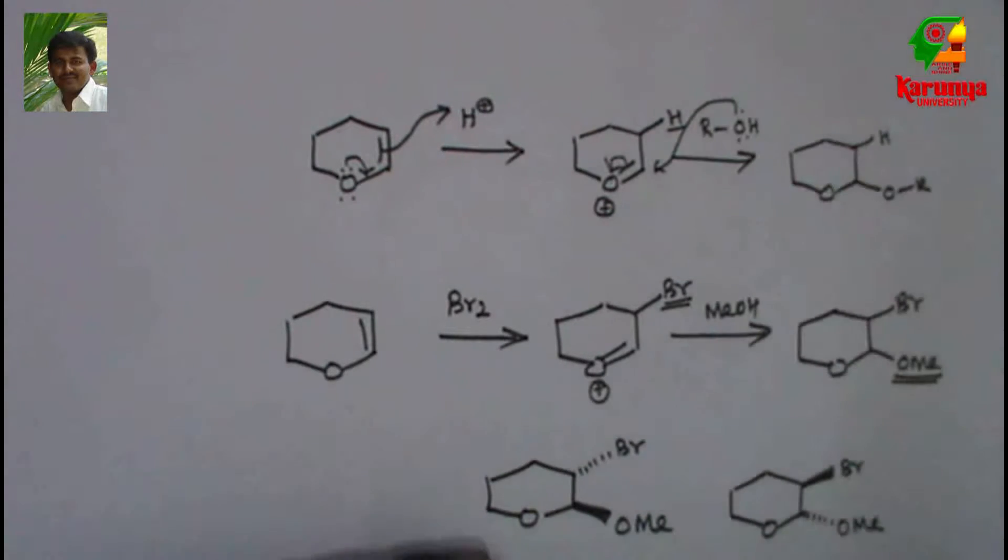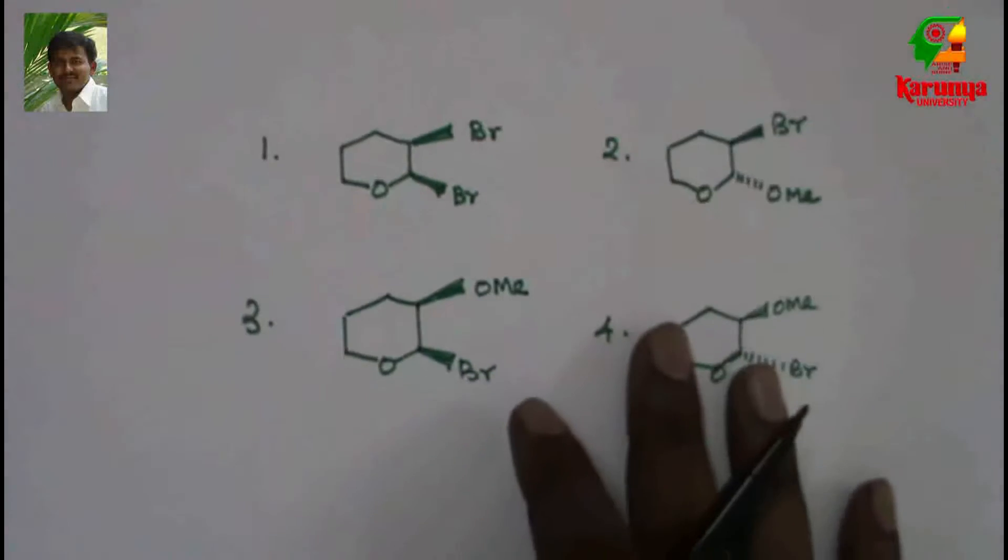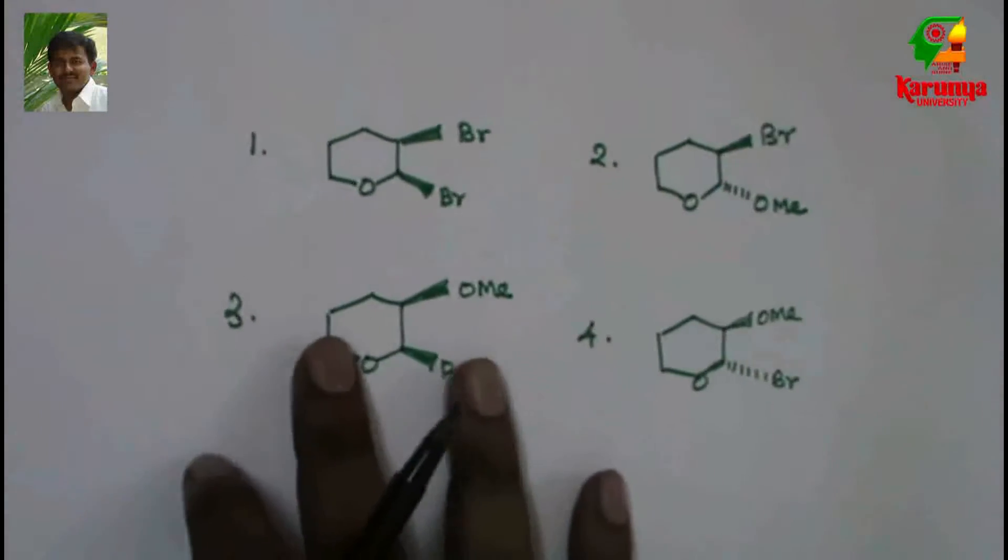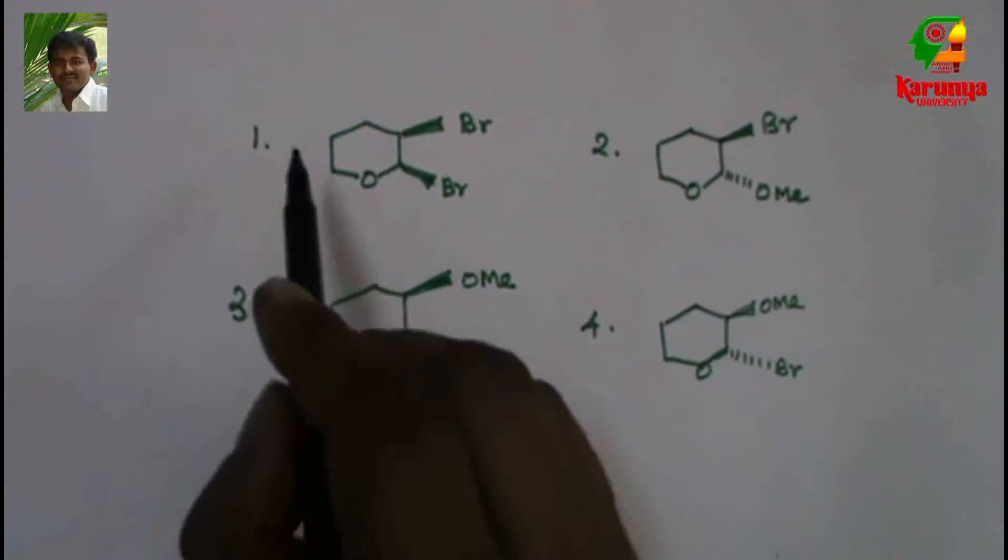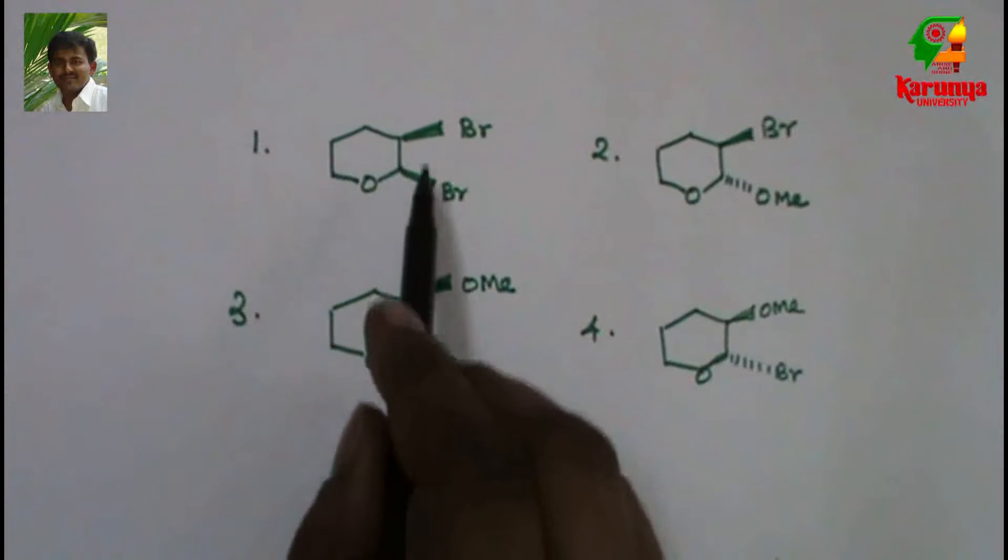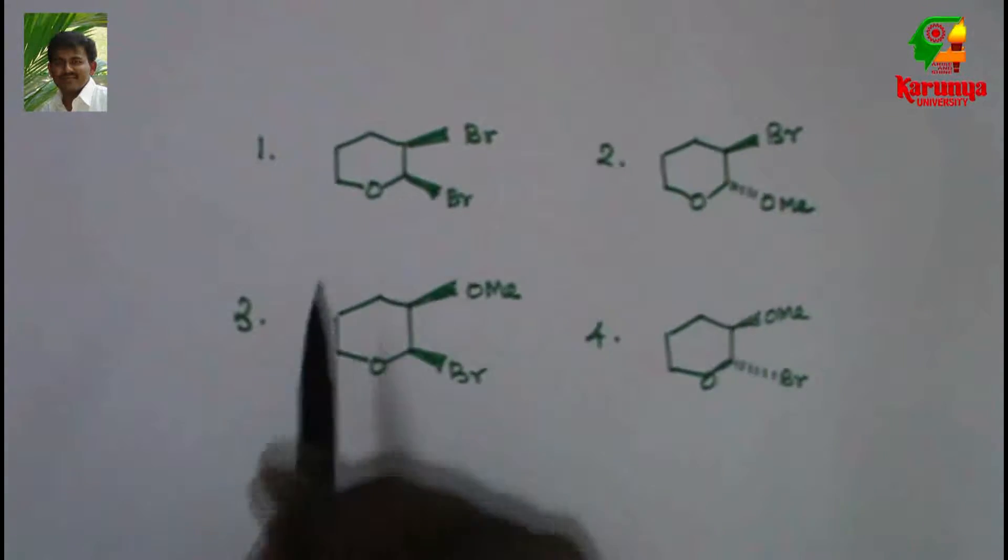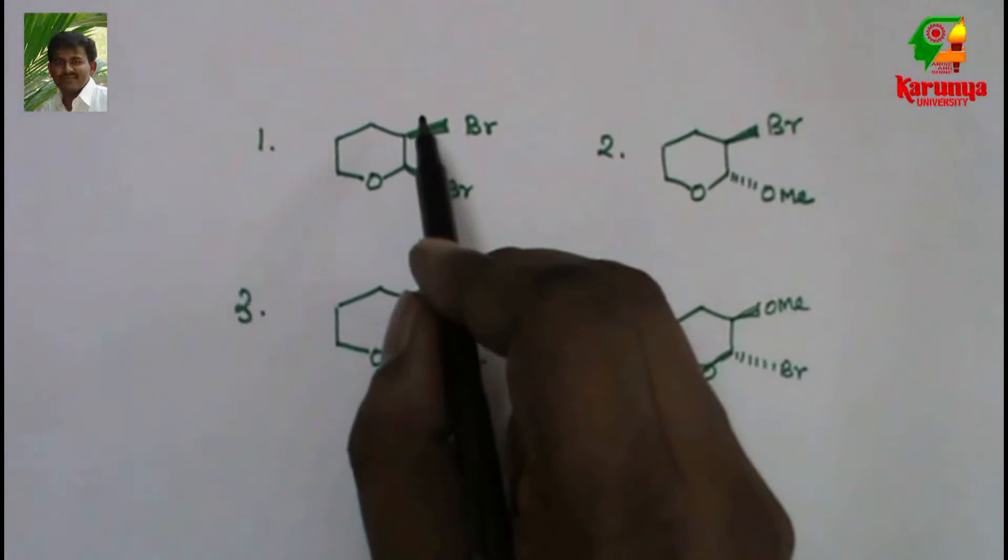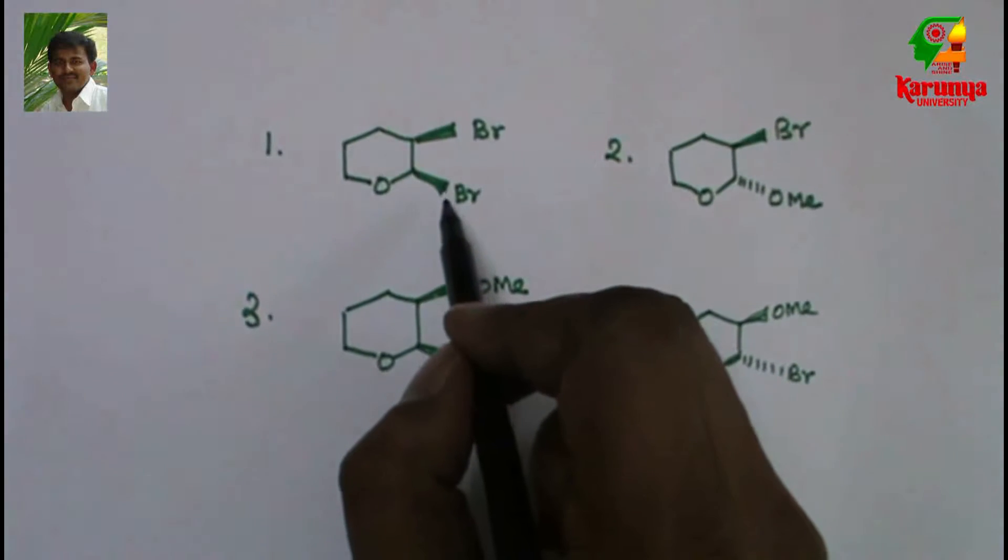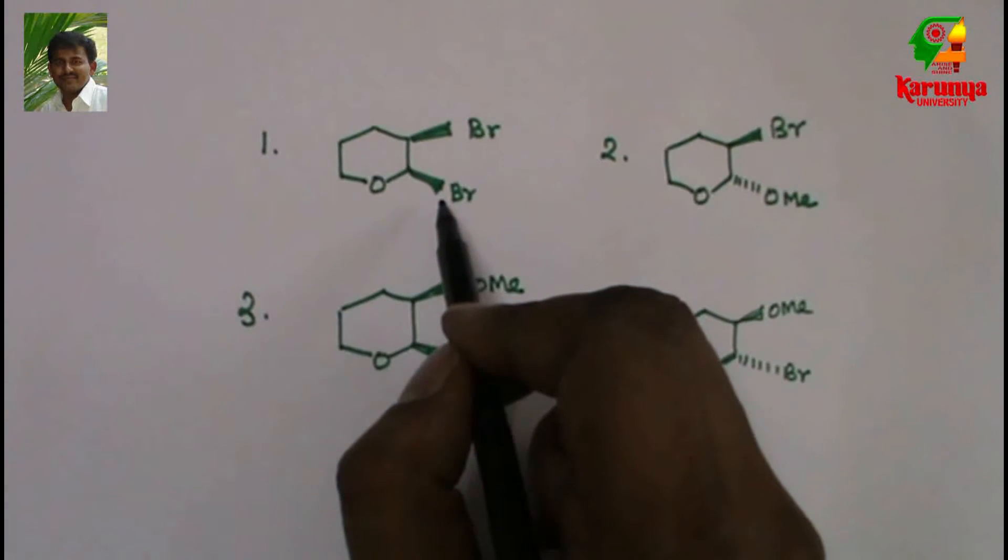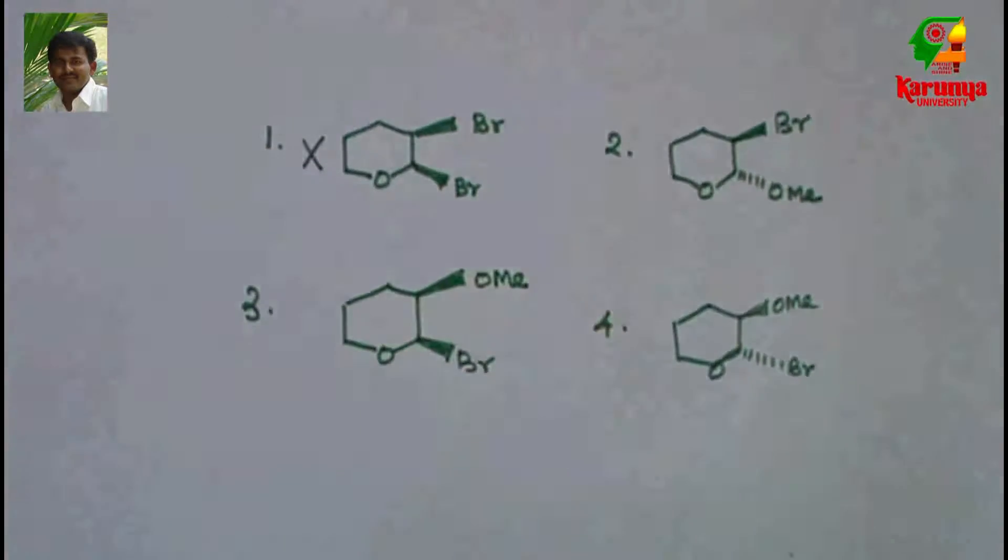Br and OME should be trans. OME should be attached to the carbon that contains oxygen. In this case they have got dibromide and they are cis. Cis stereochemistry is not possible. We may get very small amount of dibromide also in this reaction, but the major one will be bromomethoxylation, so this is not the product.